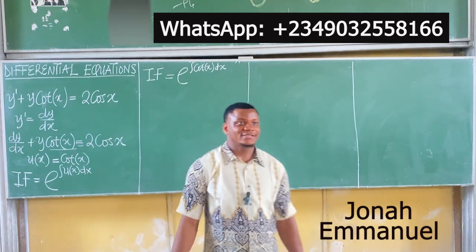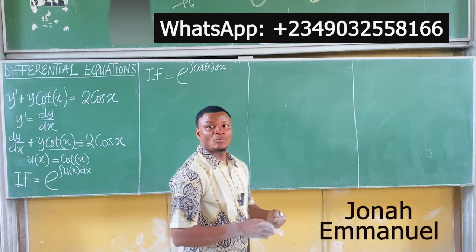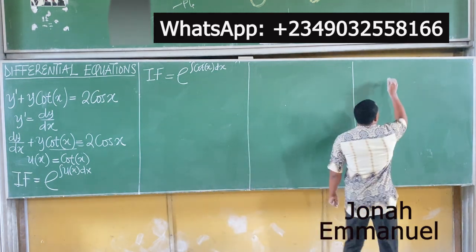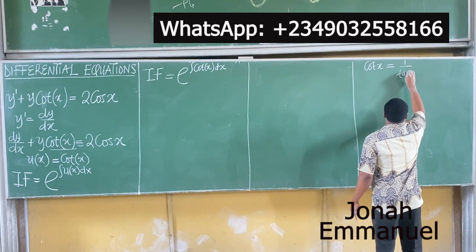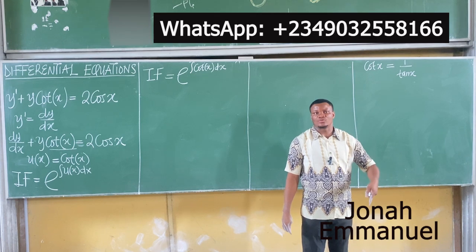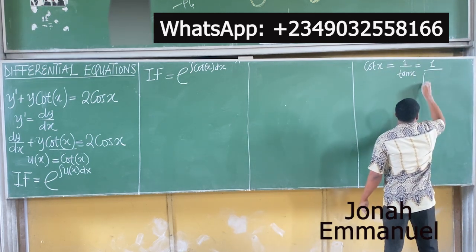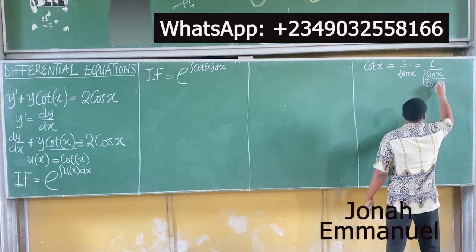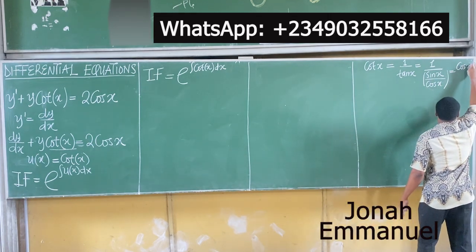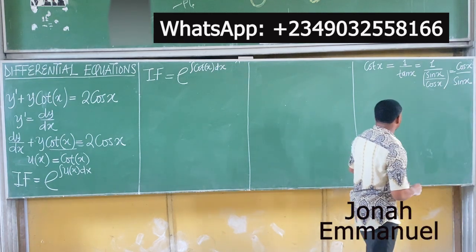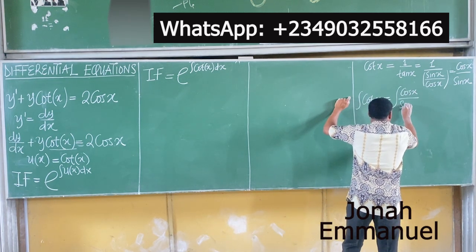What's the integral of cos(x)? Now, cos(x) means the inverse of tan(x), which becomes 1/tan(x). And since tan(x) equals sin(x)/cos(x), the inverse gives us cos(x)/sin(x). So the integral of cos(x) is the same as the integral of cos(x)/sin(x) dx.